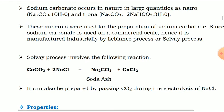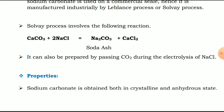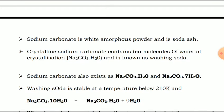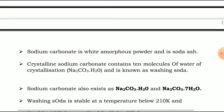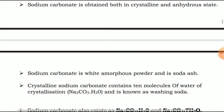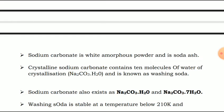The properties of sodium carbonate: sodium carbonate is obtained both in crystalline and anhydrous state. Sodium carbonate is a white amorphous powder, also known as soda ash. The crystalline form contains ten molecules of water of crystallization and is known as washing soda. Sodium carbonate also exists as Na₂CO₃·H₂O and Na₂CO₃·7H₂O. Washing soda is stable at a temperature below 210 K.